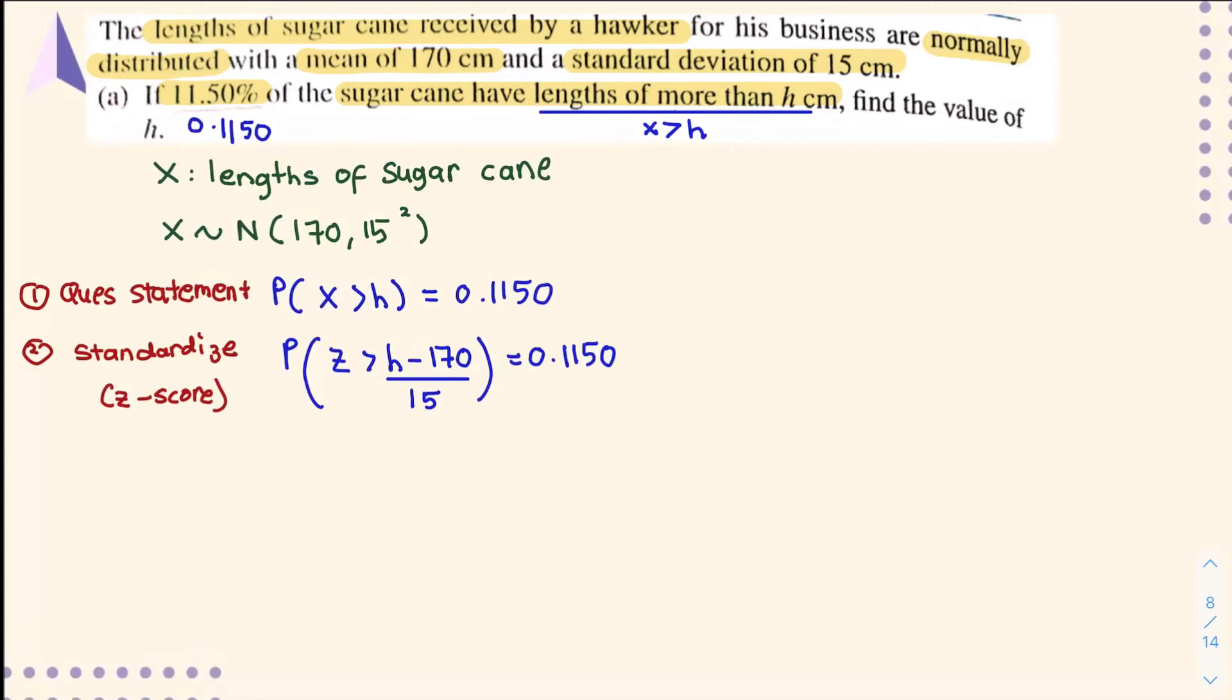The third step is to find the z-note from the table where you change (h minus 170) over 15 into z-note. After standardizing to z-note, sketch the curve so you know where the shaded region is. For probability z greater than z-note, you have two ways to represent it on the curve.